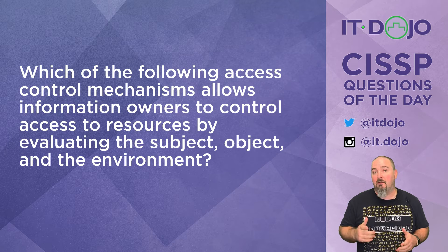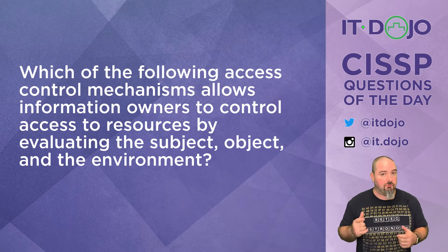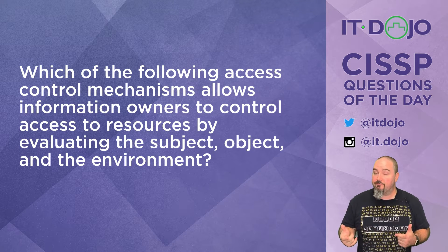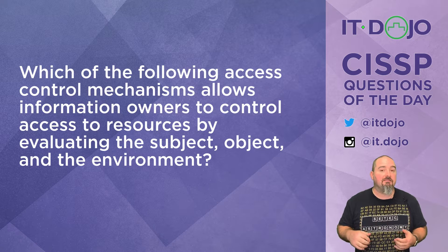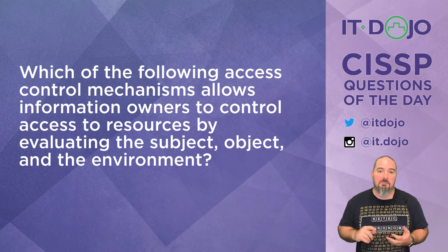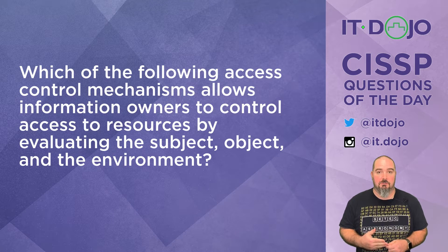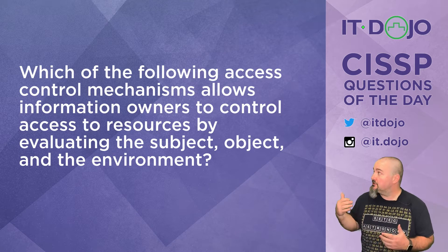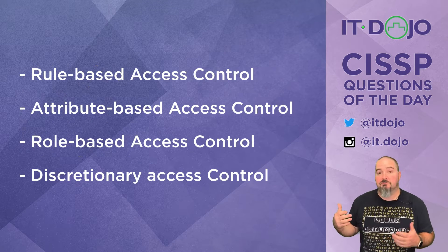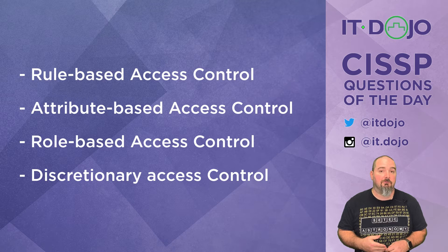Which of the following access control mechanisms will allow an information owner to control access to information resources based upon the subject, the object, and environmental considerations? Here's your list of answer choices — give it a look, think it through, and when you have the answer, click play.